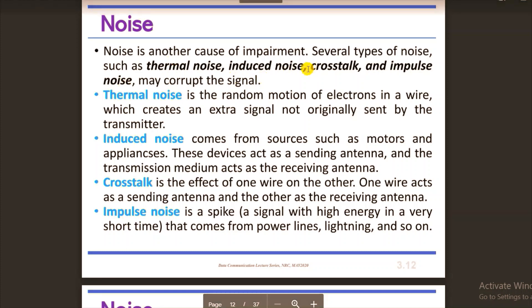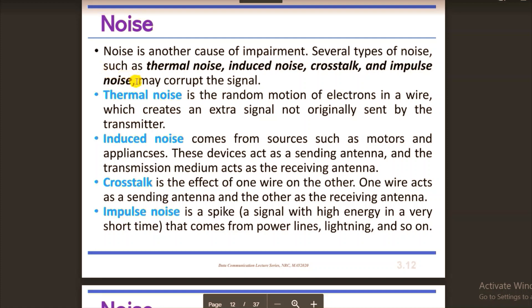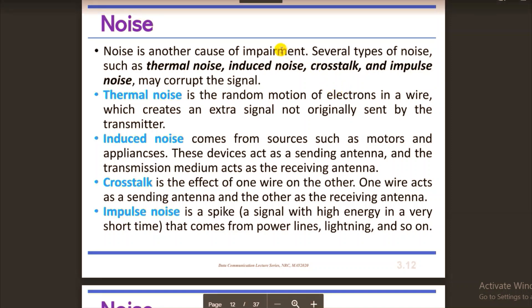Noise is another cause of impairment. There are several types of noise: thermal noise, induced noise, cross-talk noise, and impulse noise. Cross-talk noise occurs when signals interfere — for example, when one wire picks up signal from another wire, causing a short circuit or unwanted coupling.